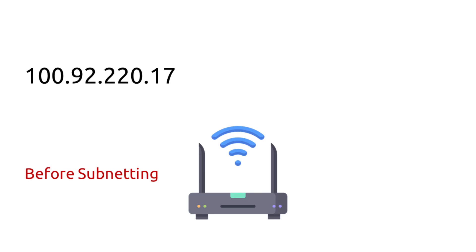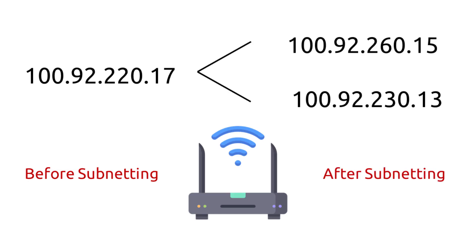Here's an example of how subnets can change a network. The Class B address is 100.92.220.17. After subnetting, it's divided into two smaller subnets: 100.92.220.15 and 100.92.230.13. However, to devices outside of the router, these two networks will still appear to come from the 100.92.220.17 IP address. If a packet is sent to that address, the router will decide which subnet to send the packet to.